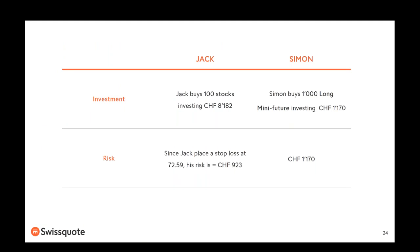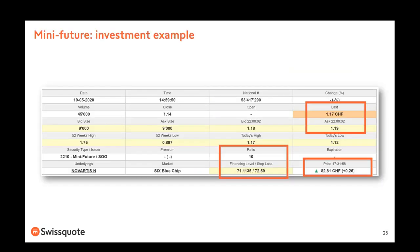Here is a recap: Jack's investment value and risk versus Simon's investment value and risk. This is the information you see on our platform when you trade mini futures. On the left you see the underlying security name; on the right, the underlying current market price — in this case, 82.81. Then you have detailed information about the mini future: volume, one-year high, one-year low, two-day high, two-day low, plus the last price and the bid and ask price — one point nineteen at the moment.